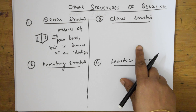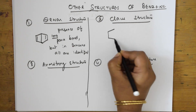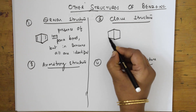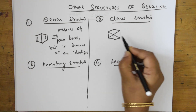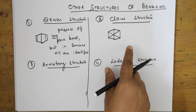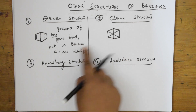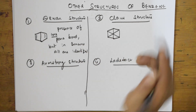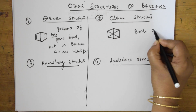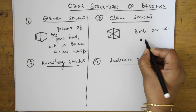When we come to cross structure — how does it look? Cross structure is also cyclic only, but this is a ring with bonds joining across. The same reason applies: all the bonds are not identical. That's why this is also not accepted, just like the Dewar structure.